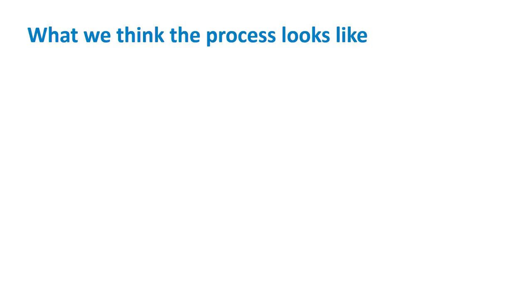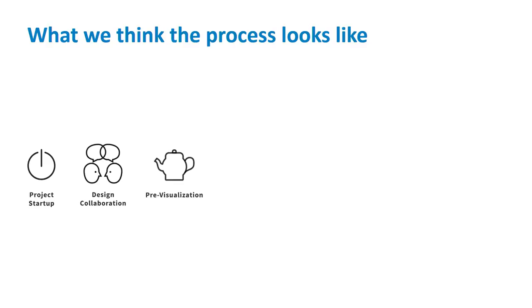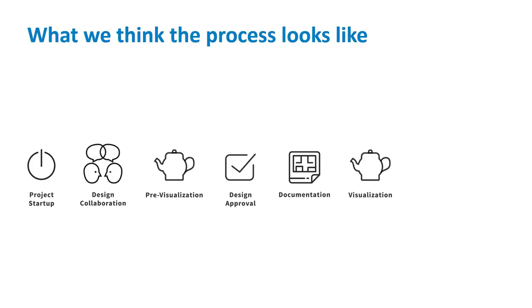So what do we actually think this looks like? Project starts up — you're not going to do work unless the project starts up. Design collaboration: you have a few people together, come up with some concepts, figure out what's going to happen. You do some pre-visualization — this could be just SketchUp, hidden lines, shaded views. You're not pouring all your resources in at this point, because you may have three or twenty options. You can't spend $5,000 on a rendering if you have twenty options at the beginning of a project. You get approval, get into documentation, into visualization — producing high-end images to sell the client — get sign-off, and then we actually build things.